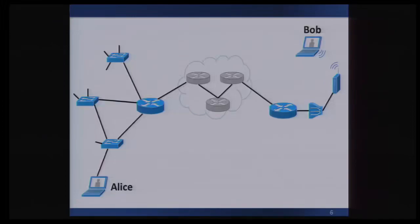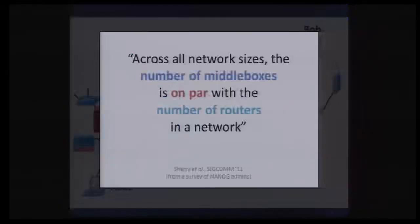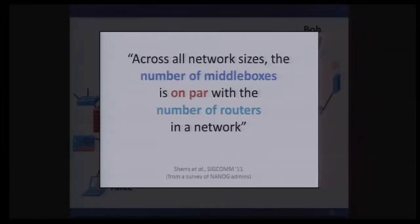Take the scenario where two TCP endpoints, Alice and Bob, communicate across the internet. We've actually oversimplified this particular scenario, but what it really looks like involves middleboxes like firewalls, proxies, et cetera. The reality is that path is complicated by middleboxes of all types doing things like enforcing policies, expanding address space, playing tricks to enhance performance, et cetera. A SIGCOMM paper a couple years ago surveyed some NANOG admins and found that across all network sizes — including enterprise networks — the number of middleboxes is actually on par with the number of routers in the network.